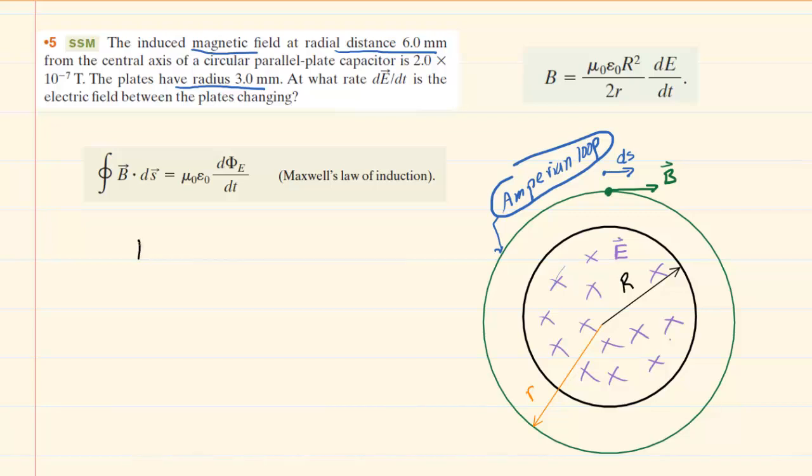To summarize that information, we know the radius of the plates themselves is three millimeters, and then the radial distance at which we have an induced magnetic field is six millimeters.